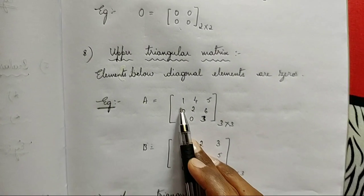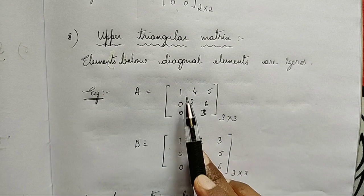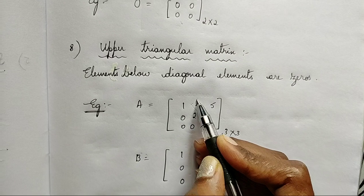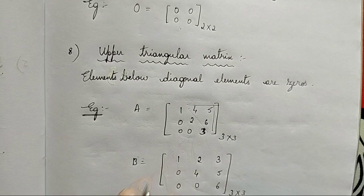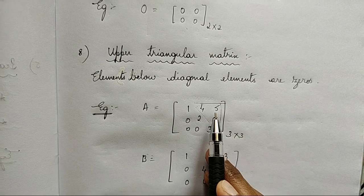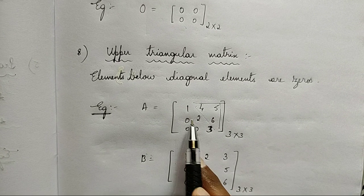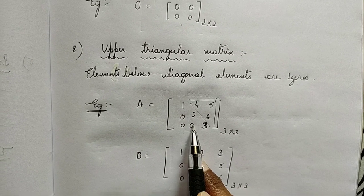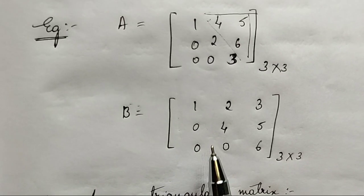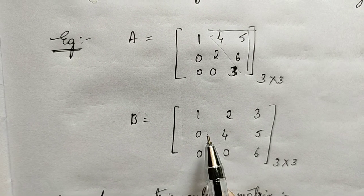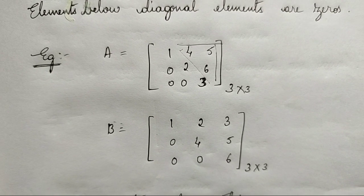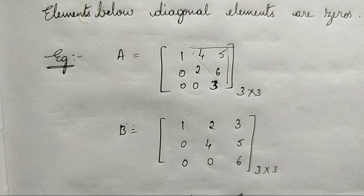Upper triangular matrix: the elements below the diagonal elements are zeros. This is the upper triangle — those elements should be non-zero numbers and the elements below the diagonal should be zeros. This is a matrix of order 3 cross 3. The elements below the diagonal elements are zeros — such a matrix is called an upper triangular matrix.